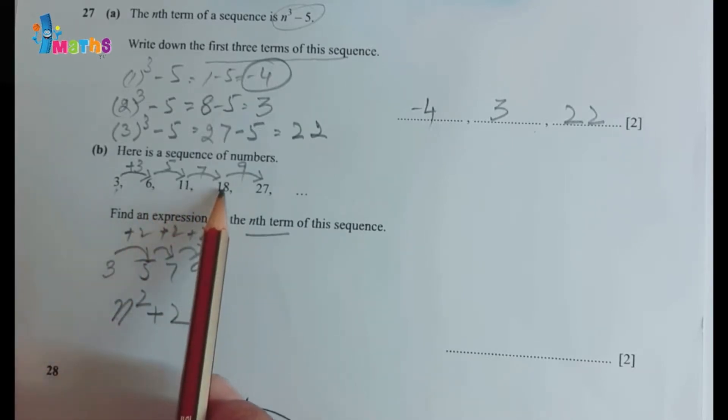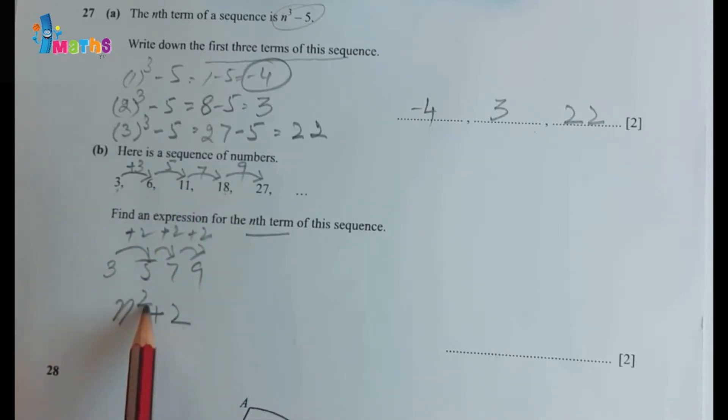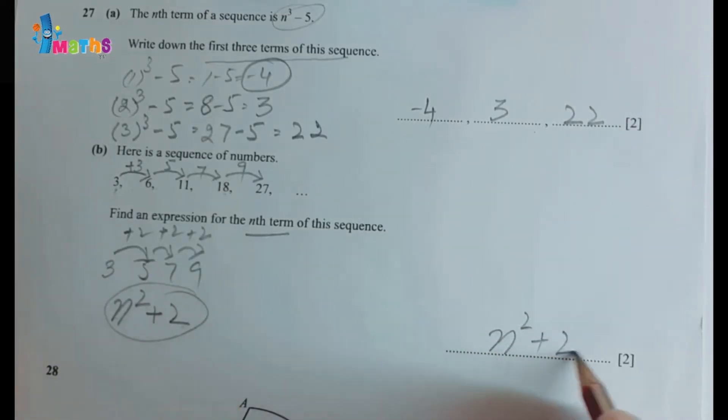So we will get n² plus 2. If we replace n equals 4, for example, we will get 4², which is 16 plus 2, which is 18. So our formula is working. We can write this one as n² plus 2. This will be our nth term.